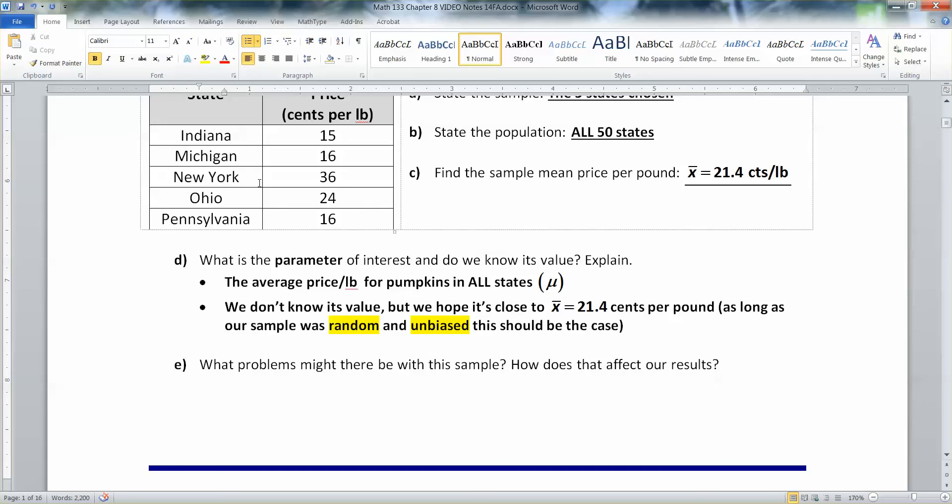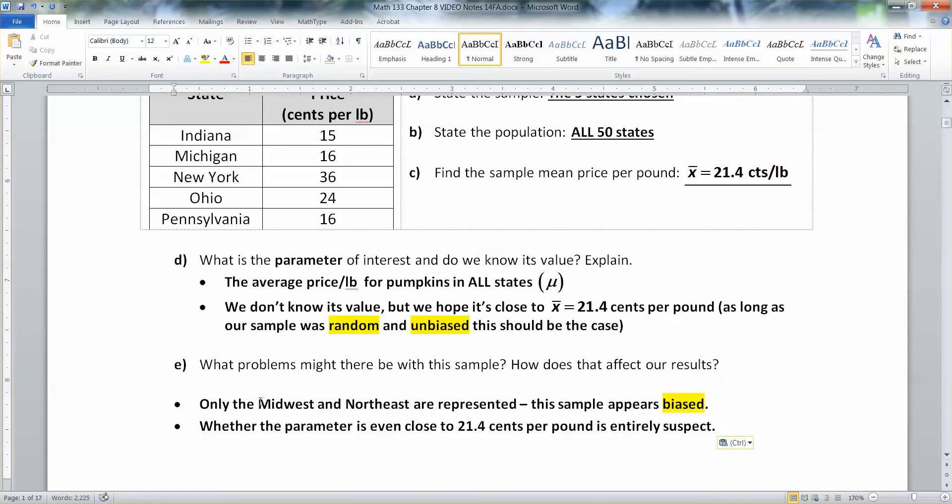Indiana, Michigan, and Ohio are all Midwest states that border each other. And Ohio borders Pennsylvania and New York borders Pennsylvania. So, they're kind of in a string. So, they're not actually spread out across all the country. Which is probably not a good idea. So, this appears to be kind of a biased sample.